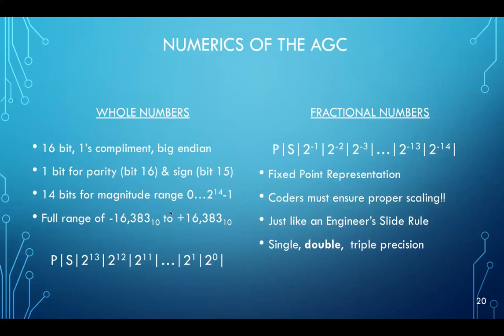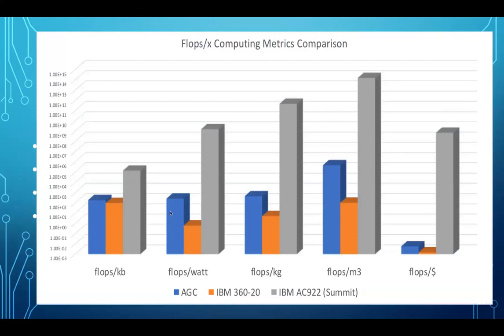So again, single, double, triple precision arithmetic with fractional numbers and the times to do summation, multiplication and division are listed there. It's probably more relevant to look at this plot or bar graph, though. So this is a comparison of the Apollo guidance computer in blue, the IBM 360 20 in orange, which was released also in 1966. And the Oak Ridge's summit machine, the current IBM AC 922 system at Oak Ridge, in terms of flops per kilobyte over there in the far left, flops per watt, flops per kilogram, flops per cubic meter and flops per dollar. And in every way, the AGC actually excelled above the IBM 360 at that time by sometimes as much as three orders of magnitude or more in terms of performance. And of course, summit beats them all.